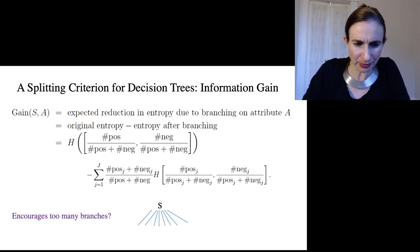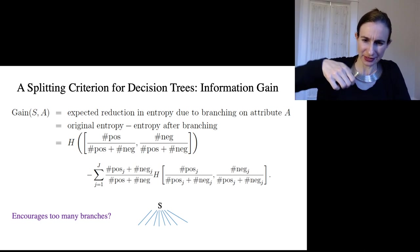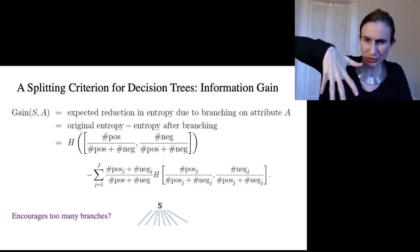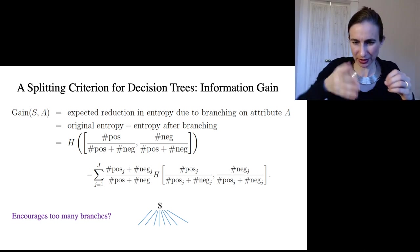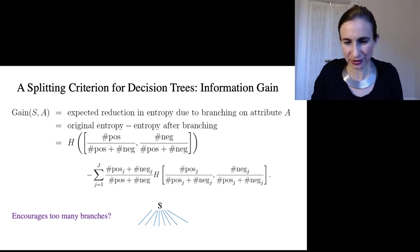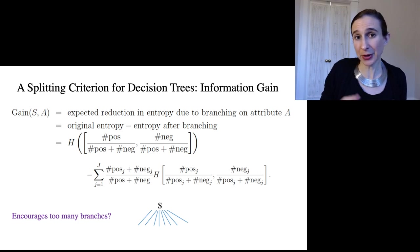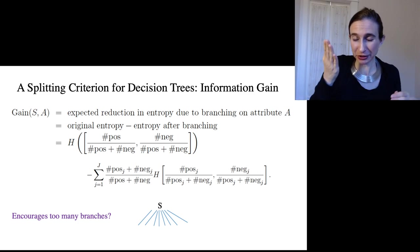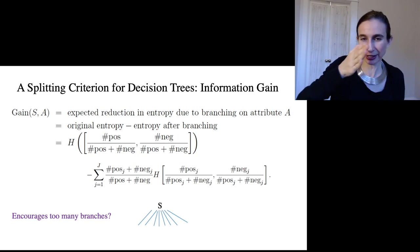But I'd like to point out an issue with information gain: it tends to choose splits with a lot of branches, and that can lead to overfitting. For instance, if you happen to have a split that would literally put every single data point in its own leaf...